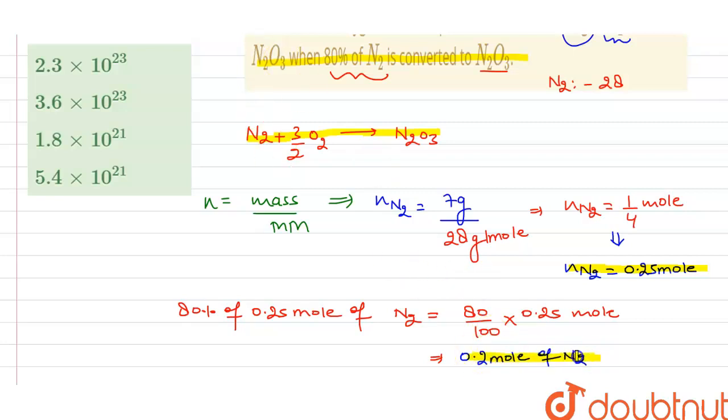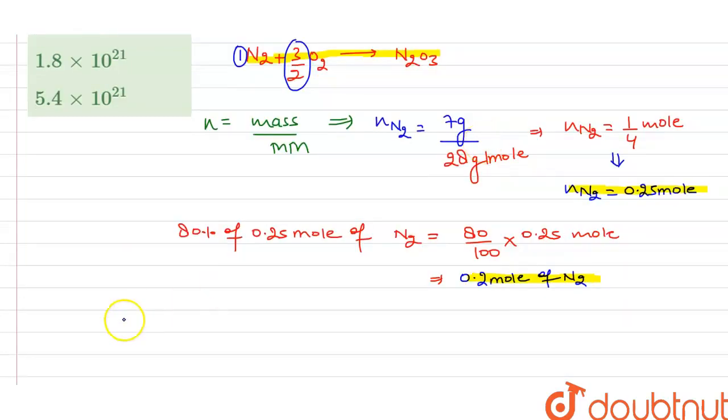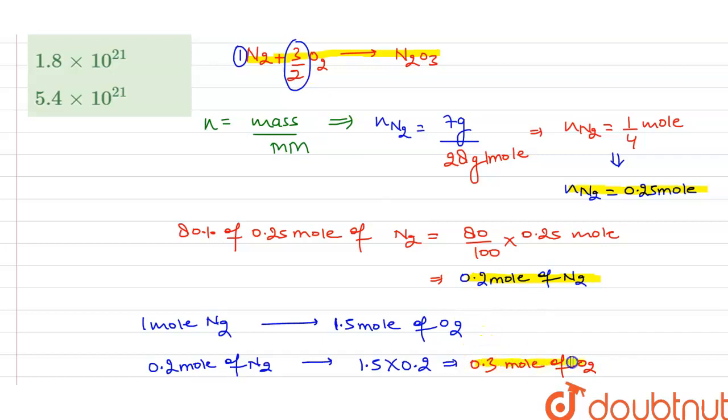Here exactly 0.2 mole of N2 is being reacted with oxygen. Analyzing the equation, one mole of N2 reacts with 3 by 2 mole of oxygen. By unitary method, 0.2 mole of N2 will react with 1.5 multiply 0.2, which gives 0.3 mole of oxygen.